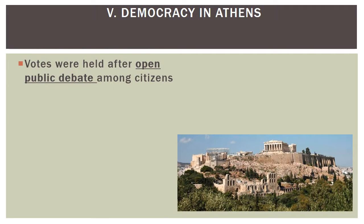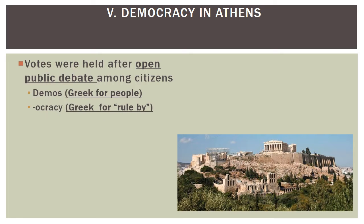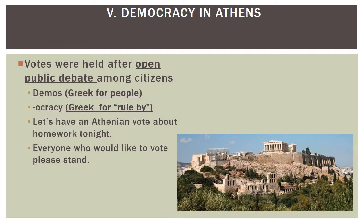Athens was the city-state with a democratic government. Votes were held in public forums after public debate — voters would climb up to the Acropolis, debate their positions, and then vote. Voters used black and white stones: black meant yes, white meant no. The stones were submitted and counted. 'Demos' is Greek for 'people' and '-cracy' is Greek for 'rule by.' If we were to have an Athenian vote in class, women would need to sit down because women weren't citizens in Athens and couldn't vote.